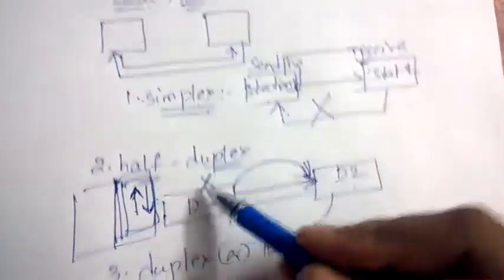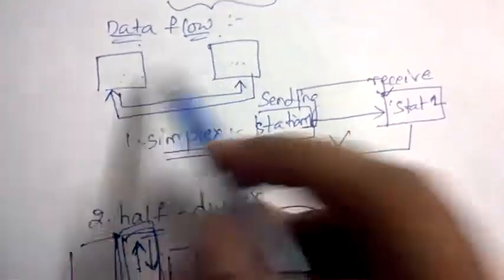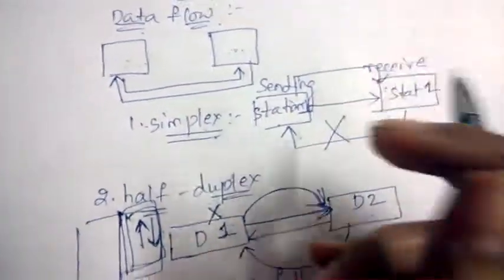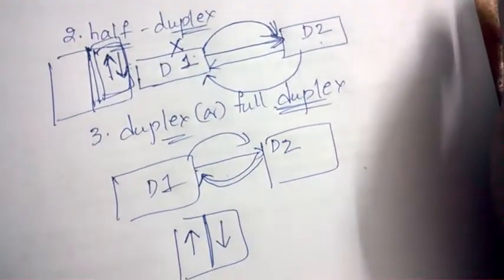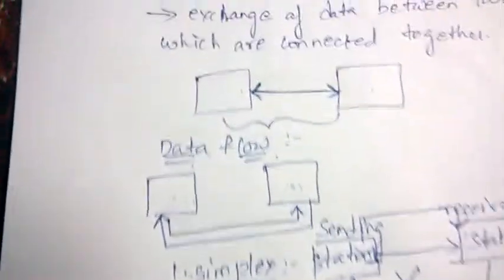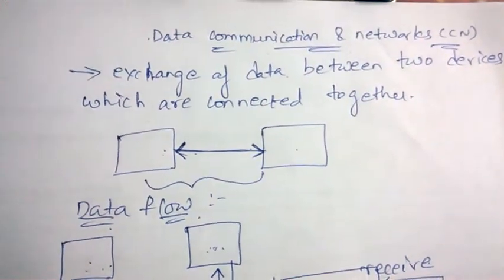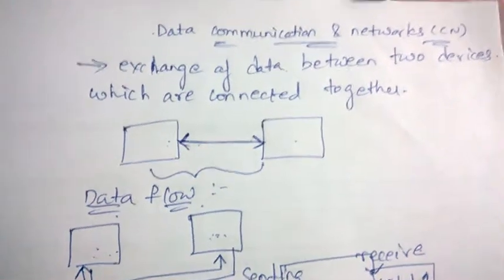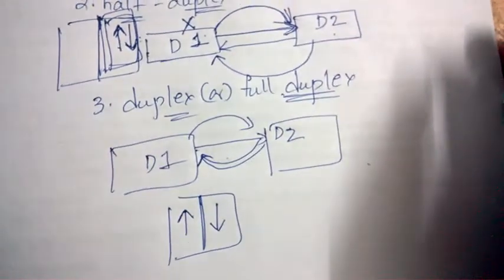These are the three categories that explain the flow of data between devices. Hope you found this video useful. I'll be doing more videos on data communication and other subjects — don't forget to subscribe to my channel and hit the bell icon to get future notifications. If you want me to cover any topic, let me know in the comment section below. Thank you so much for watching.